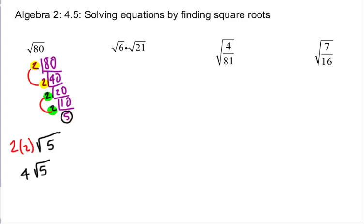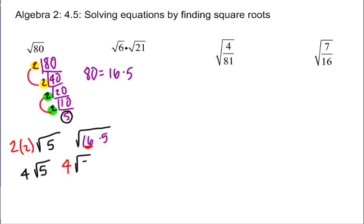Another way to do this same problem is to think about the different factors that make 80 and look for perfect squares. For example, 80 is equal to 16 times 5. So this would be the square root of 16 times 5. The square root of 16 is 4. The square root of 5 we don't know, so it just stays as square root of 5. That's a couple of different ways you can look at these problems.